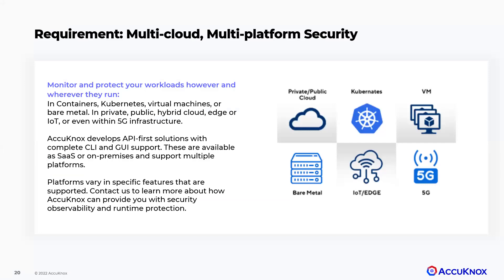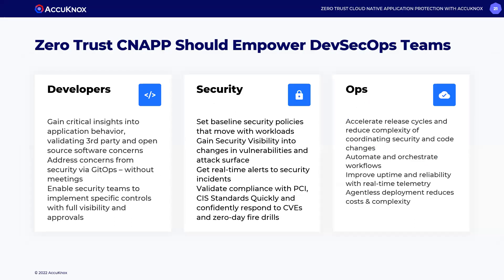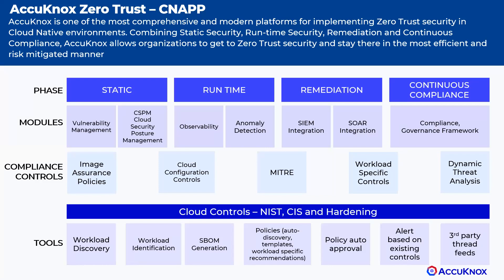A modern zero-trust CNAPP solution needs to protect modern-day workloads like Kubernetes, legacy workloads like virtual machines and bare metal, and futuristic workloads like IoT, Edge, and 5G. Furthermore, a modern CNAPP solution needs to bridge the siloed worlds and ensure a streamlined DevSecOps workflow. This is precisely what Acunox delivers — a fully integrated zero-trust solution that integrates static and runtime security for modern-day and legacy workloads, delivered in an open-source-led model and deployable in a DevSecOps fashion.